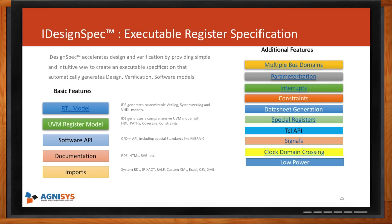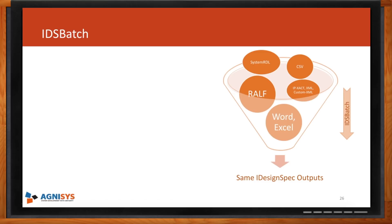iDesignSpec handles quirky, custom, and special registers well — various types of special registers can be generated. For batch processing, IDS Batch runs on all platforms and can be made part of a makefile, run in a grid engine, or run jobs in parallel, generating exactly the same outputs as from Word or Excel.